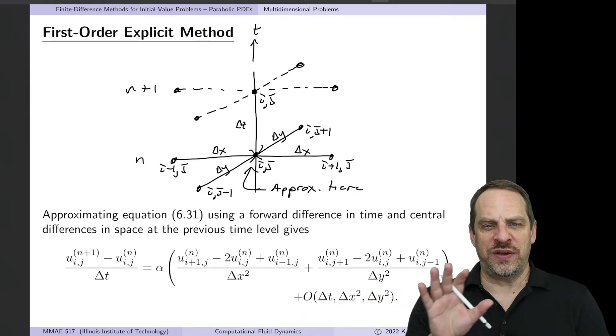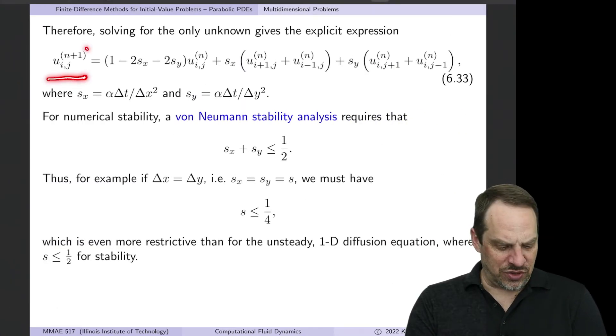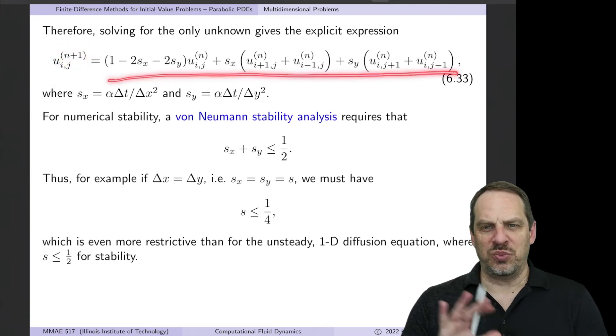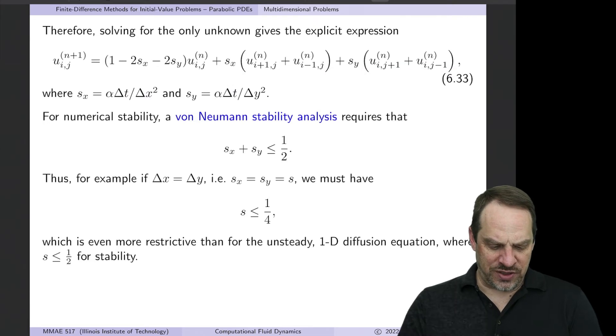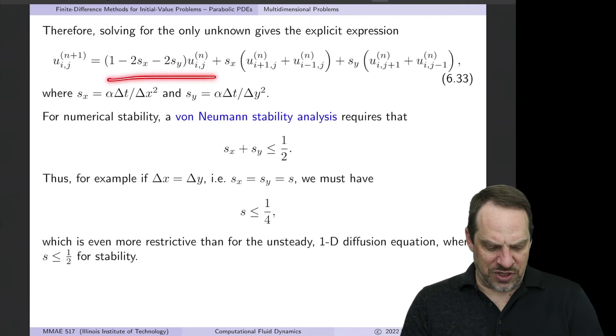Put the unknowns on the left, the knowns on the right, and we get our explicit expression for uij at the new time level, n plus one, in terms of stuff that we know. There's just more terms now on the right-hand side that we know. You'll notice now I had to define an Sx and an Sy because I have a delta x and a delta y. So Sx is alpha delta t over delta x squared, and Sy is alpha delta t over delta y squared. So you see that over here on the right-hand side.